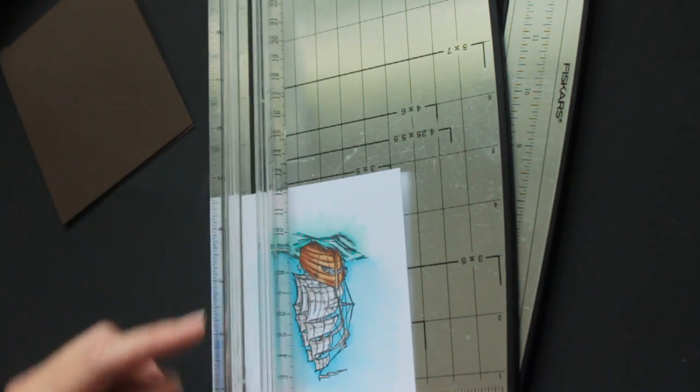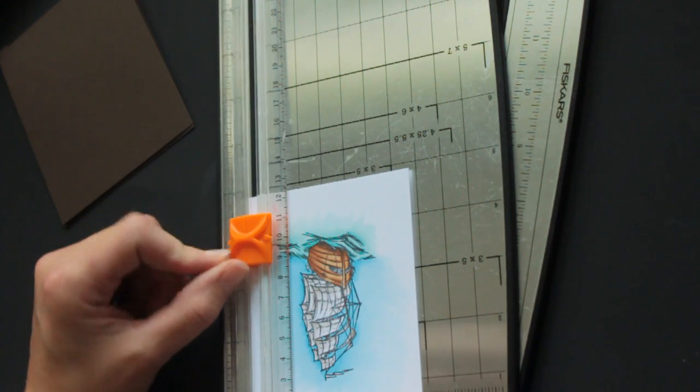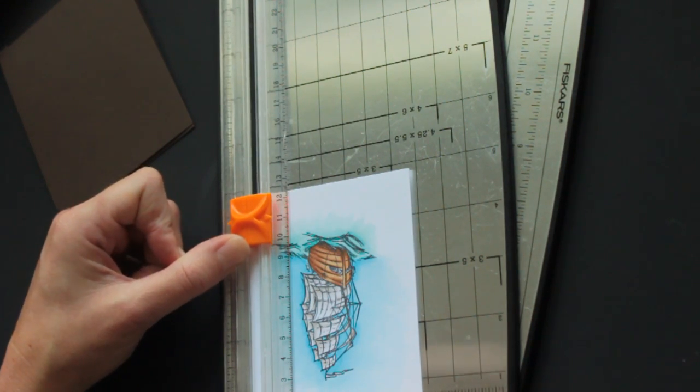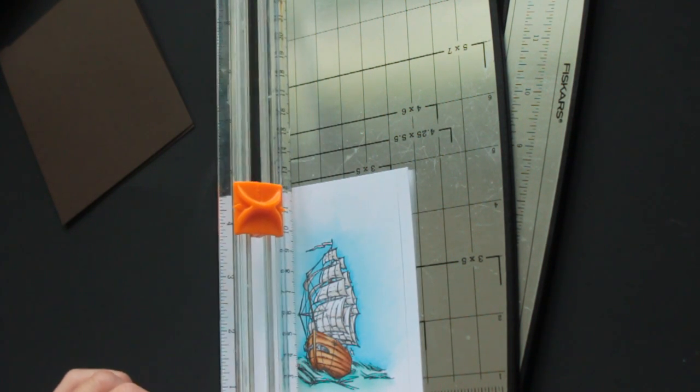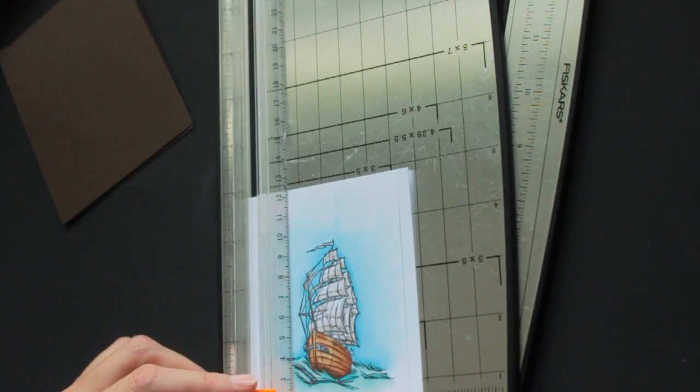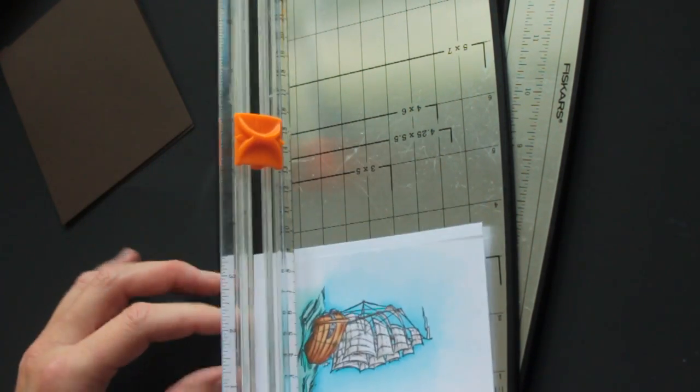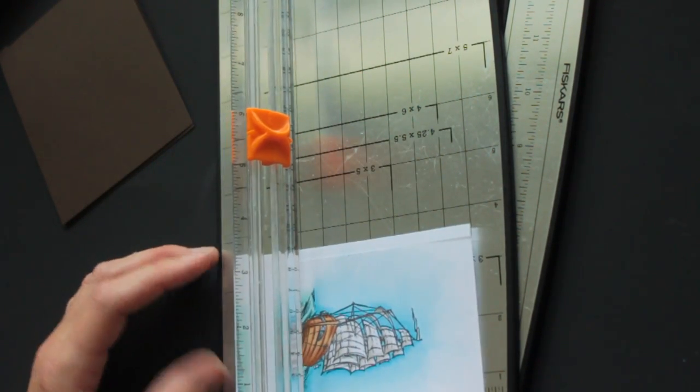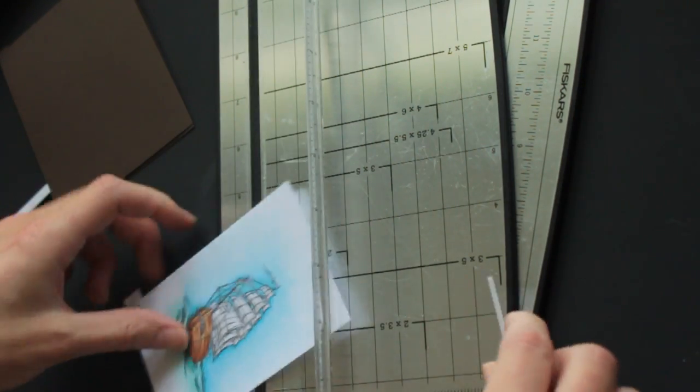So you just leave half an inch up here and you line it up with one eighth of an inch. So I cut all the way to three eighths. And now I turn it around again, line it up on the other side with one eighth and start at half an inch and cut all the way up. And then I cut those tabs off.